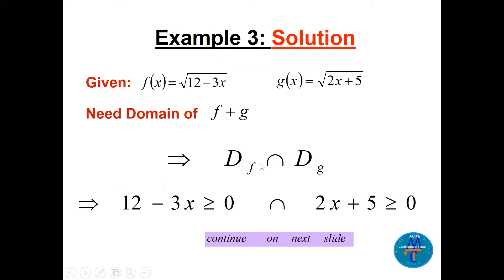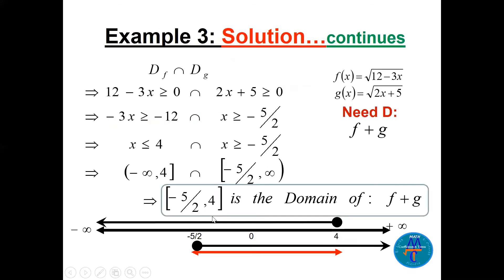The domain of the sum is domain of f intersection domain of g. For f, take the radicand: 12 − 3x ≥ 0, giving x ≤ 4, so (−∞, 4]. For g, take 2x + 5 ≥ 0, giving x ≥ −5/2, so [−5/2, ∞). These are both linear inequalities. The intersection is [−5/2, 4] — from the smaller number to the larger.